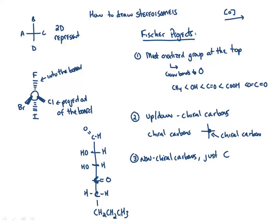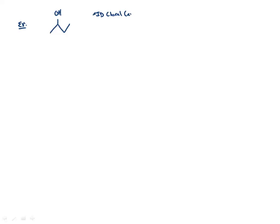Fischer projections are used when we care about whether something is a stereoisomer or not. Sometimes we draw molecules normally and simply ask whether there's a chiral carbon. Let's look at some examples. For this molecule — which we'd name 2-butanol — are there any chiral carbons? The rules for a chiral carbon are: it must be tetrahedral (no double or triple bonds), have four different groups attached, and have no additional planes of symmetry.